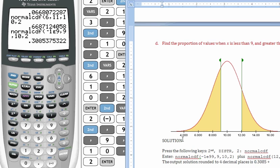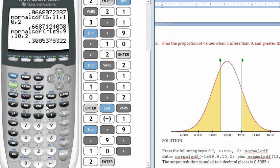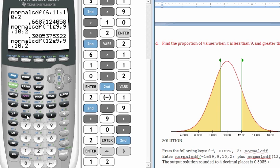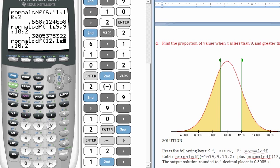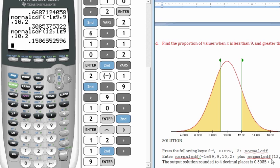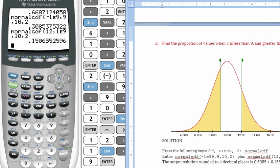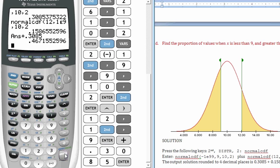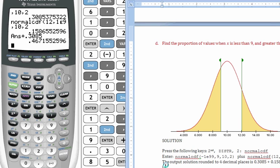And I'm going to add that to the second proportion here. And actually, here's a quick shortcut I can show you. Instead of doing the whole thing over again, the second distribution normal, you can do a second enter. That brought up what I had before. I'll arrow back up to the problem and just change what I need to change. 12, comma, and then it's positive 1 to infinity. And then it's still a mean of 10 and a standard deviation of 2. Hit enter, and that gives me 0.1568. Adding that to our other proportion of 0.3085 gives us a solution of around 46%, 0.4671, which would be our final solution for this one.